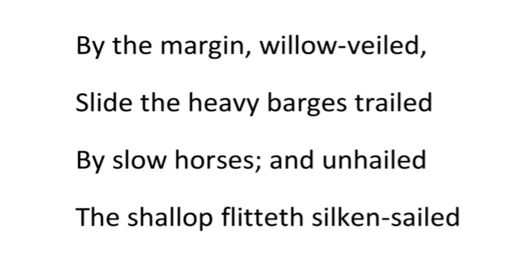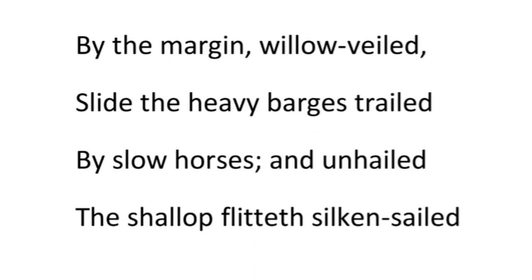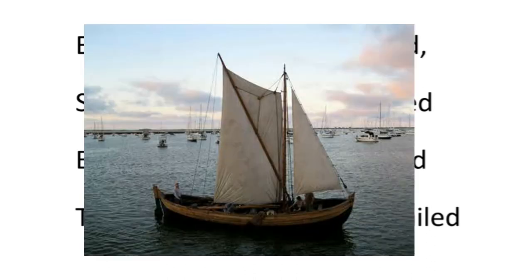On the banks of the river, with willow trees growing all around, the heavy barges are seen being pulled by slow horses. Not only that, the shallop — the small light boats — are seen being pushed by their silky sails down to Camelot.